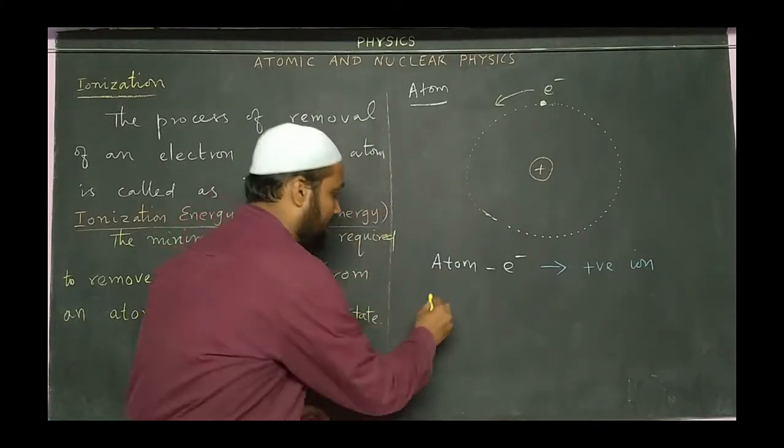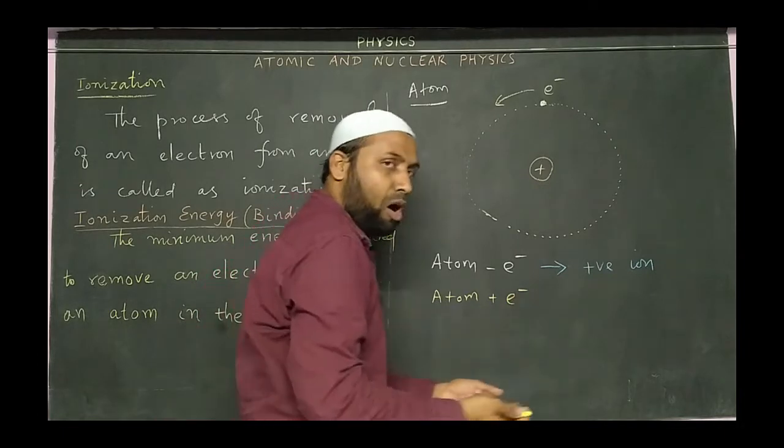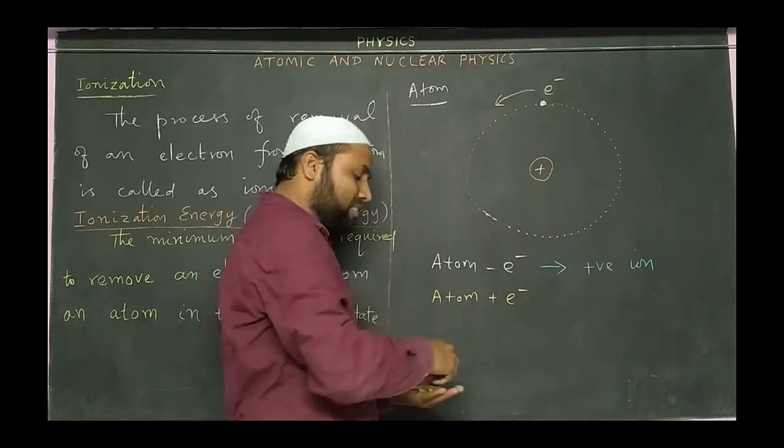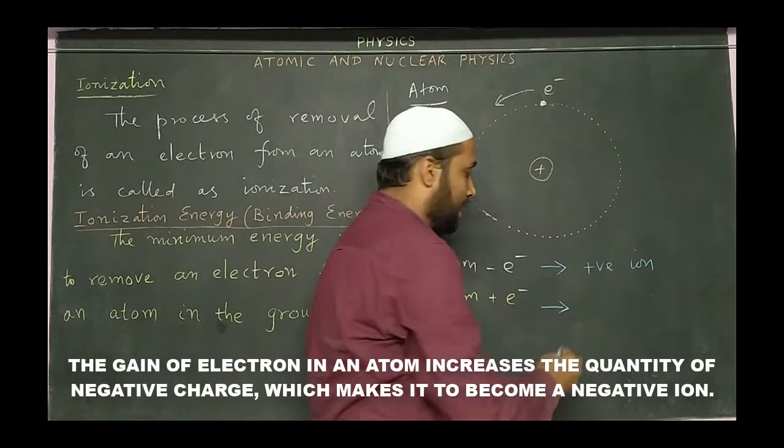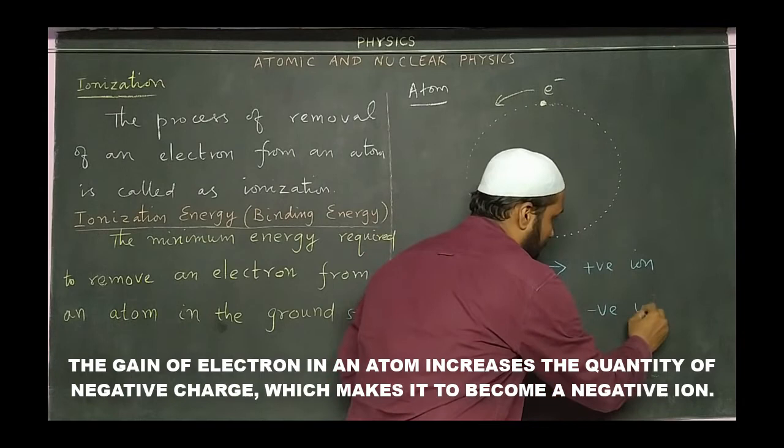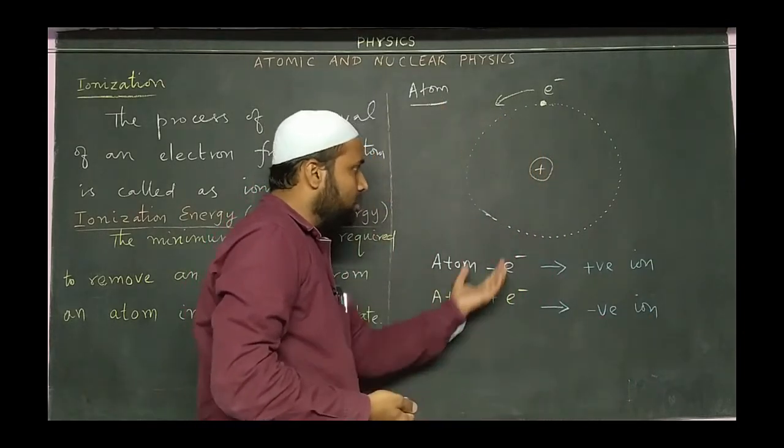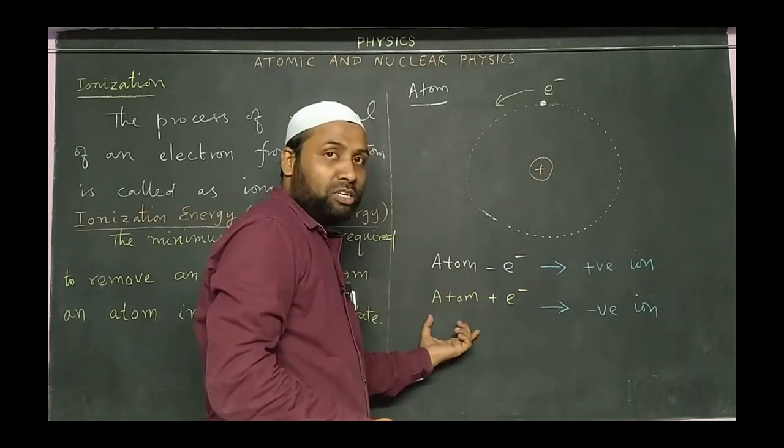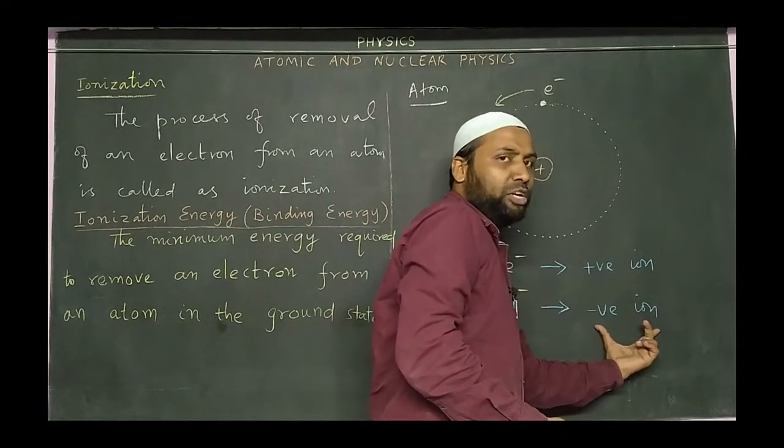In a similar way, if we supply an electron to an atom, after gaining electron, that atom turns into a negative ion. When an atom gains electron, the amount of negative charge increases. As a result, it becomes a negative ion.